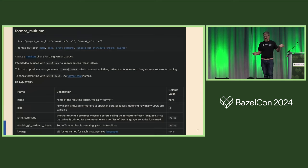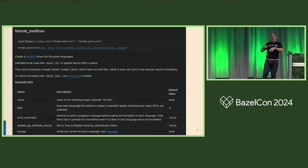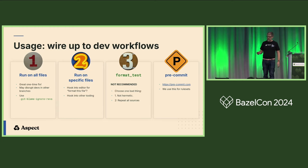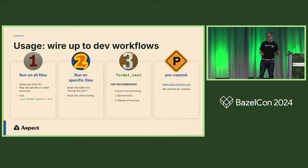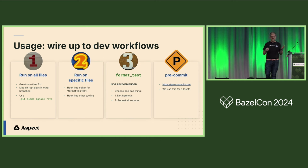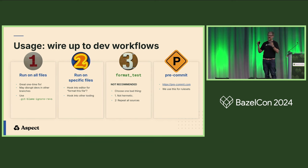That is all packaged up neatly as format_multirun — the rule you would interact with. It's a Bazel-runnable rule that invokes the shim and configures it with all the different formatters it knows how to run. There are a few ways to use this. You can run it on all files with no arguments — useful if you want to format your repo one time. That's how you typically get started when you introduce formatting. That can disrupt developers working in other branches, but they can just format their branch too.